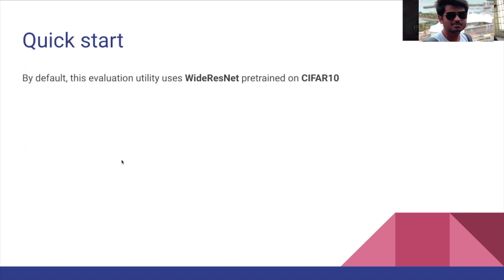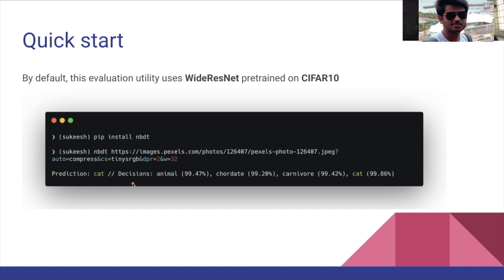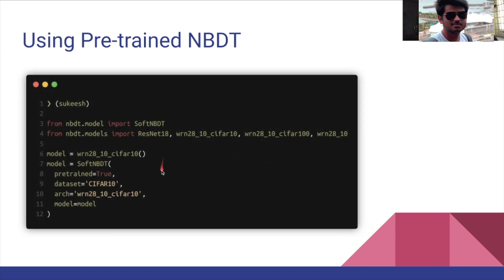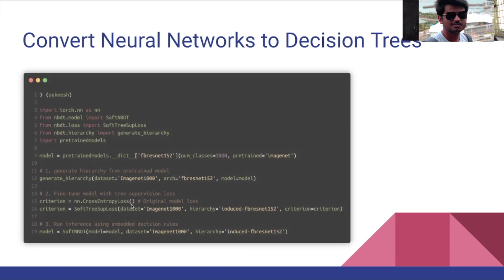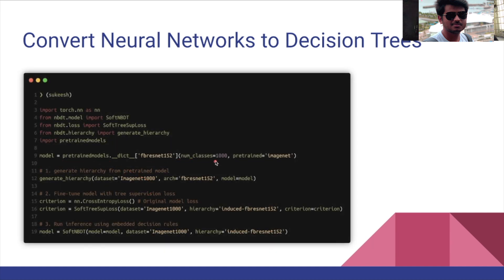To see how NBDTs work in practice, there is an NBDT library. You can install it using pip install nbdt. When you pass in an image URL, it outputs the final prediction along with intermediate decisions like 'animal,' 'carnivore,' 'cat,' and so on. For using a pre-trained NBDT, you simply pass in the model — that's pretty much all it takes.